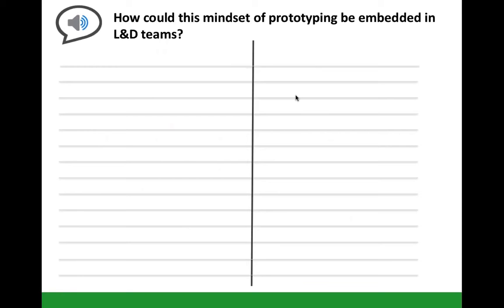When I asked how to embed prototyping into the mindset of L&D people, responses included: building a culture of continuous improvement, building a culture of experimentation, allowing people to play a little bit more, and fostering a collaborative approach. It's partly about play and experimenting — not everything has to be perfect all the time. Someone added that getting change agents and early adopters involved in your prototyping process makes it more secure because those people are more open to taking risks.